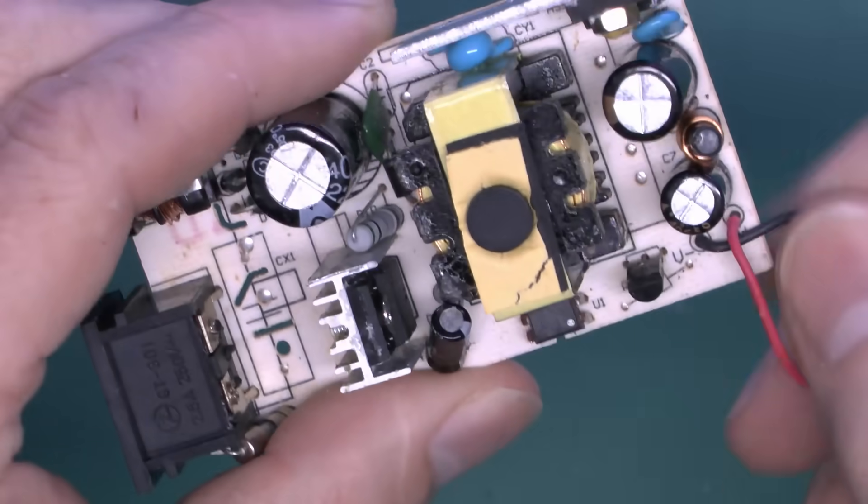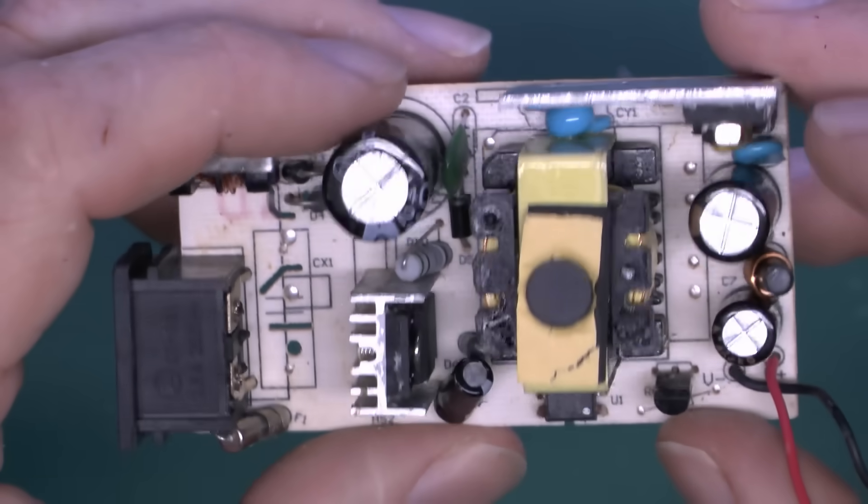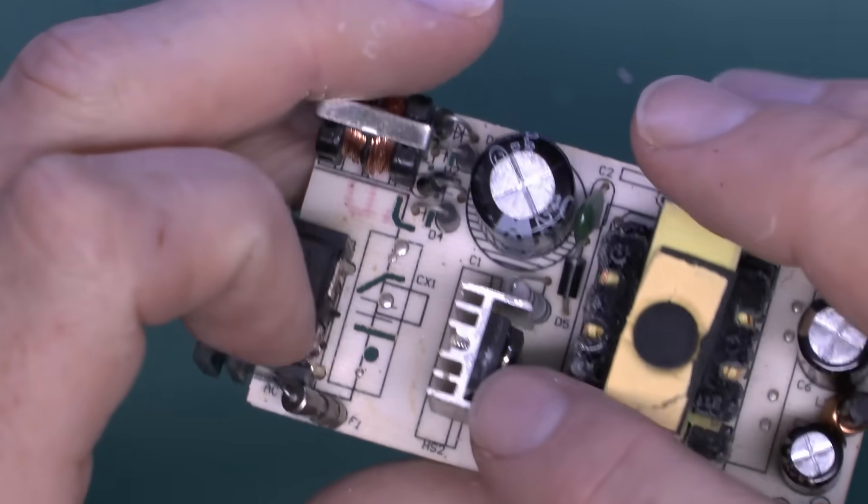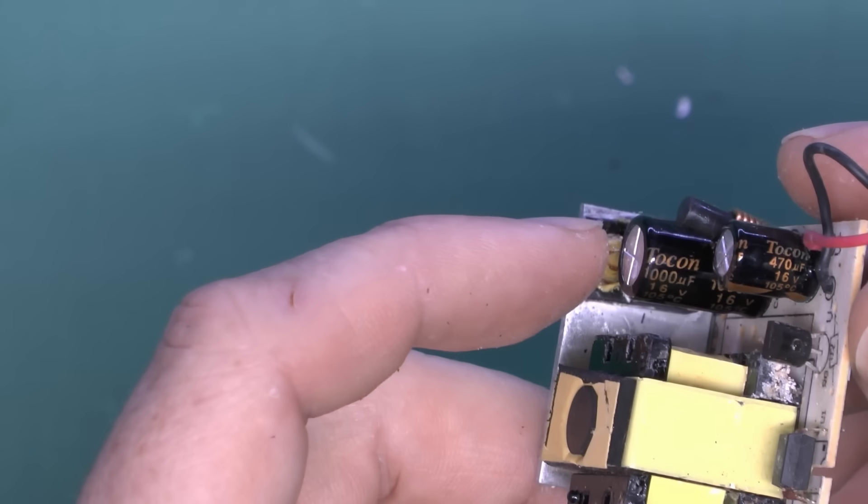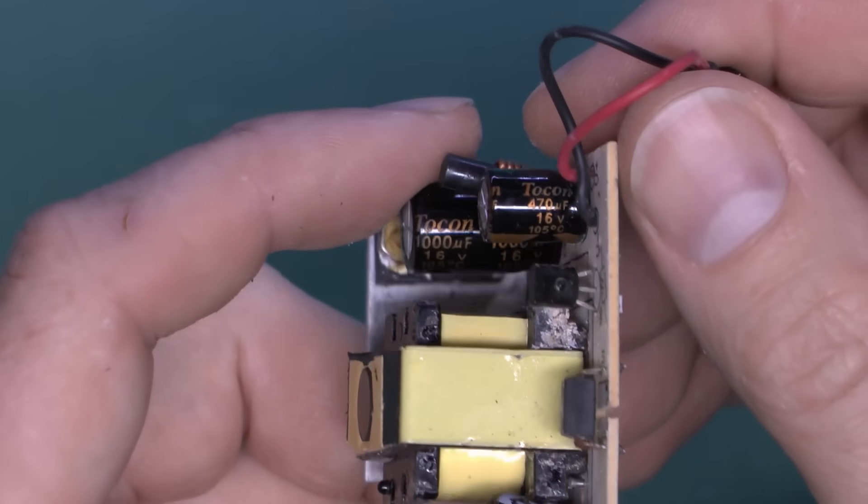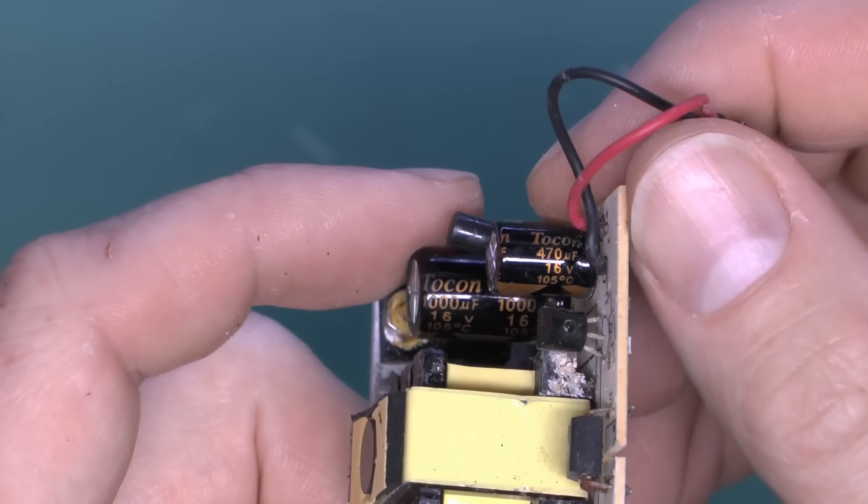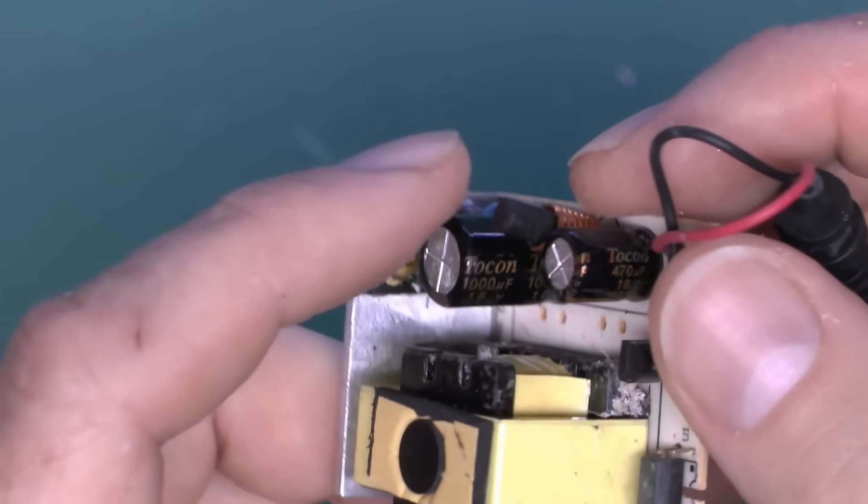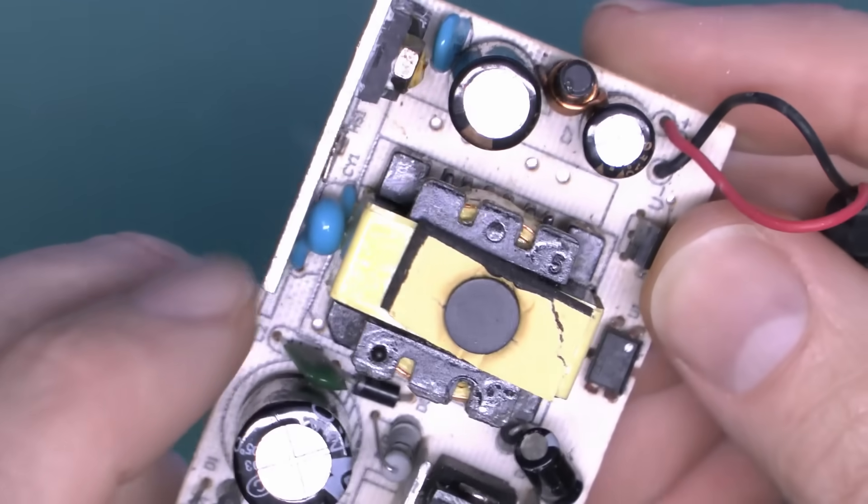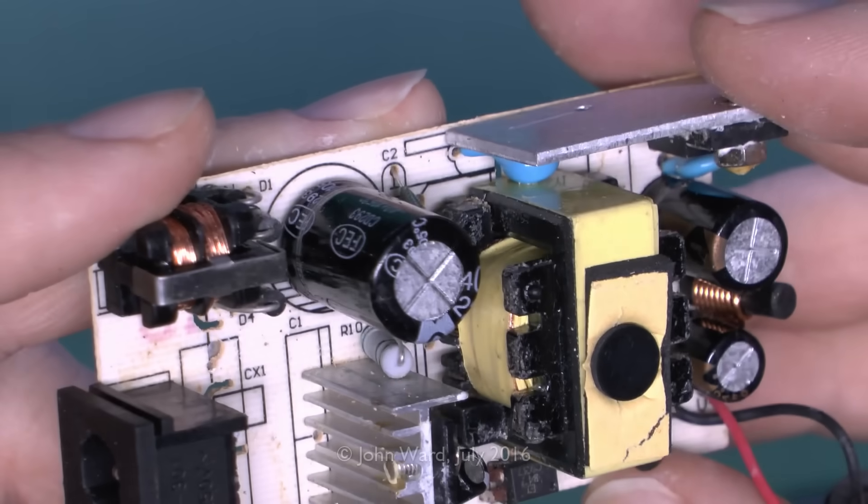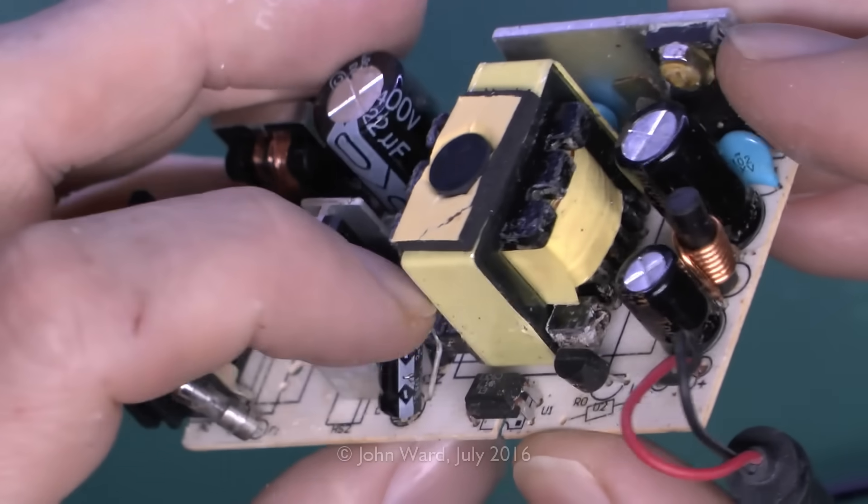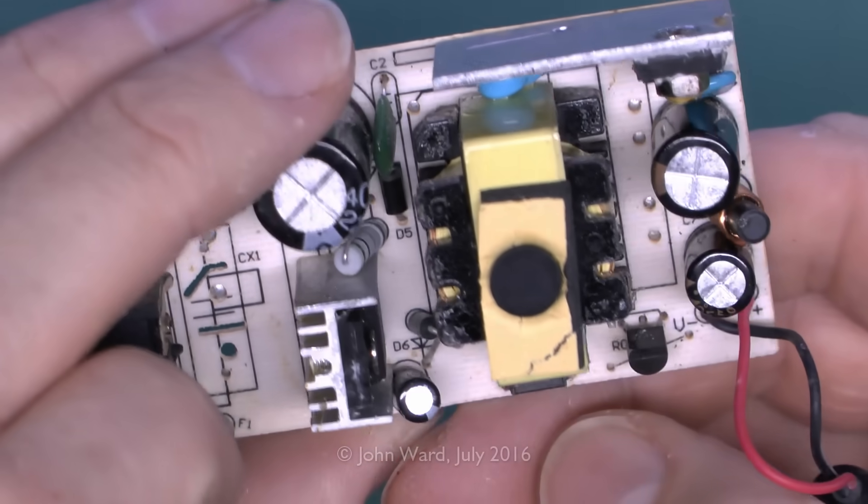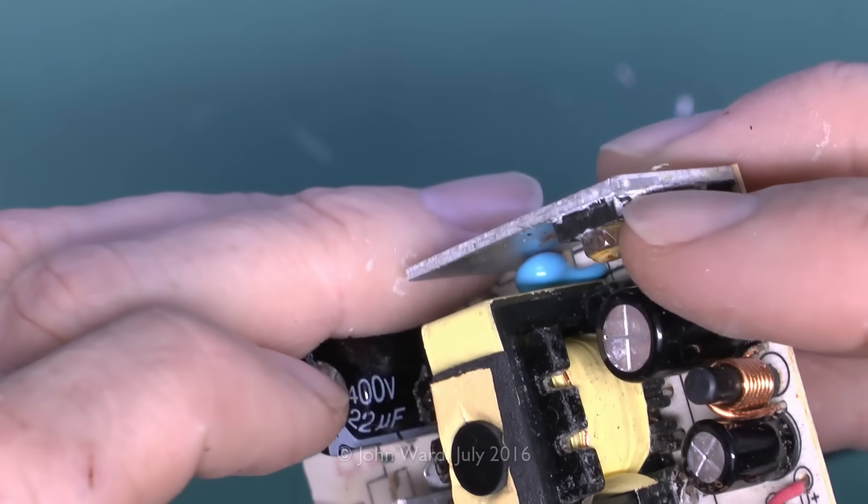Inside, fairly standard looking switching power supply. Mains power in here. Supposed to be a fuse here which may be what's blown. Four diodes there, presumably bridge rectifier. Capacitor, 22 microfarads at 400 volts. Main transformer here, it's got a large one, but this is a 2.5 amp output. Couple of other devices with their own heatsinks. More capacitors with gold writing, those are Tocon. 1000 microfarads 16 volts and 470 at 16 volts. Little transistor presumably down there. Nothing obvious seems to be burnt or destroyed.